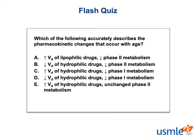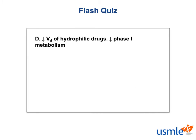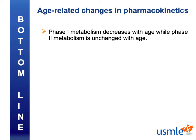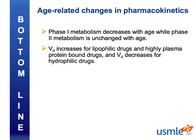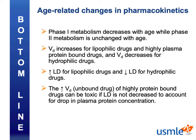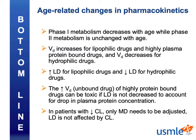Now let's try out a flash quiz: which of the following accurately describes the pharmacokinetic changes that occur with age? The correct answer is D: decreased volume of distribution of hydrophilic drugs due to decreased total body water, and decreased Phase I metabolism. Here are the bottom lines: Phase I metabolism decreases with age, while Phase II metabolism is unchanged. Volume of distribution increases for lipophilic drugs and highly plasma protein-bound drugs, and decreases for hydrophilic drugs. You need to increase the loading dose for lipophilic drugs and decrease the loading dose for hydrophilic drugs to compensate for these volume of distribution changes. The increased volume of distribution of unbound drug for highly protein-bound drugs can be toxic if the loading dose is not decreased to account for the drop in plasma protein concentration. In patients with decreased clearance, only the maintenance dose needs to be adjusted — the loading dose is not affected by clearance.